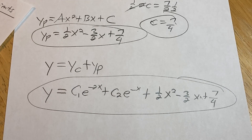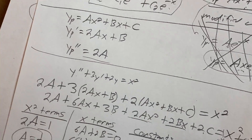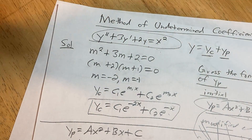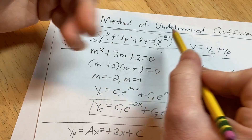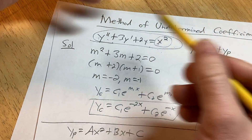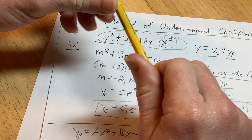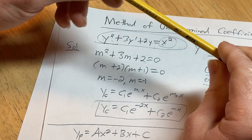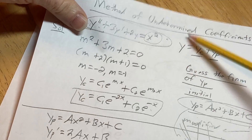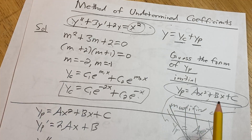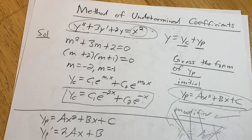That's a super easy example but still took over 10 minutes. The method of undetermined coefficients is mainly used when you have a linear differential equation with constant coefficients and the right-hand side is a polynomial, an exponential like e to the x or e to the 3x, sines and cosines, or any linear combination of those. If the right-hand side is something like the secant function, natural log, or 1 over x, you'd use variation of parameters instead. Hopefully this helps — keep doing mathematics.